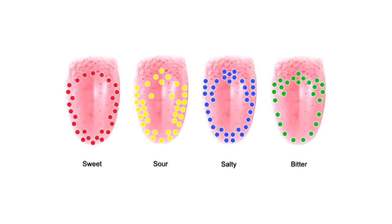But before defining each of these tastes, we can ask ourselves a simple question: how can the human body detect taste? Well, it's obviously thanks to our tongue. Unlike what many people affirm, taste can be sensed all over the tongue, whatever the taste was.